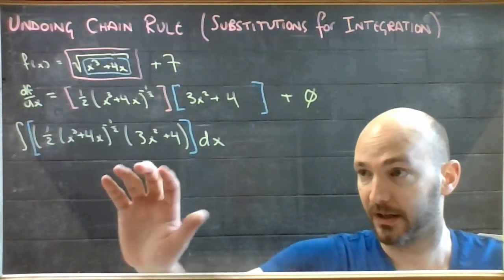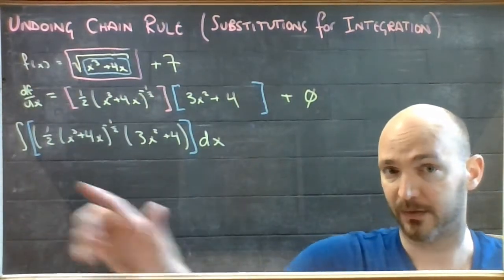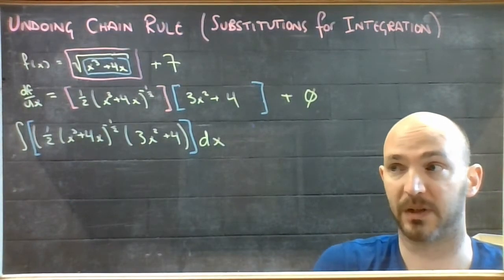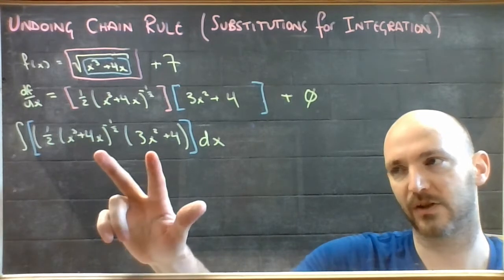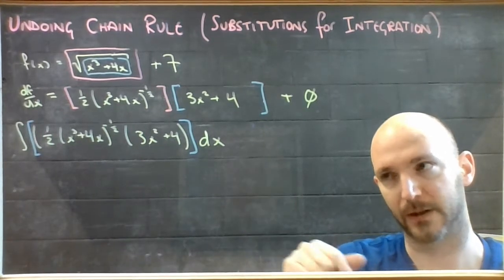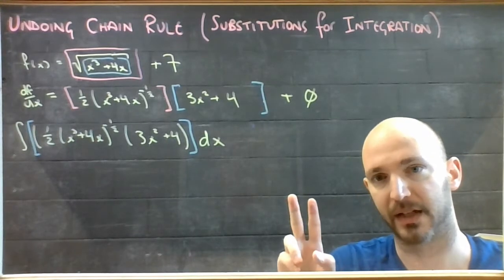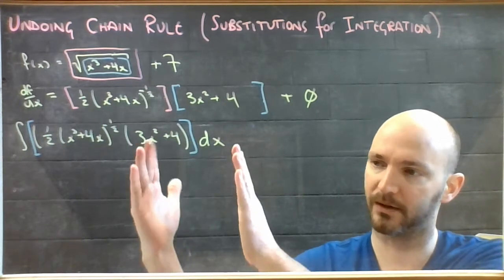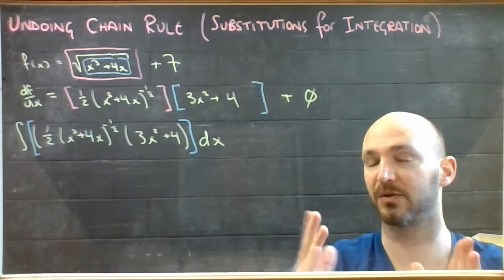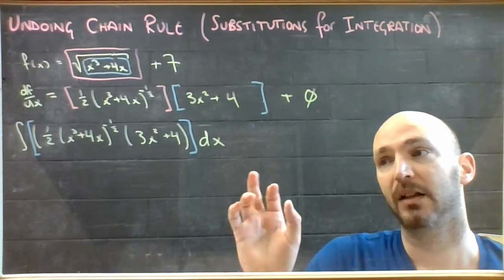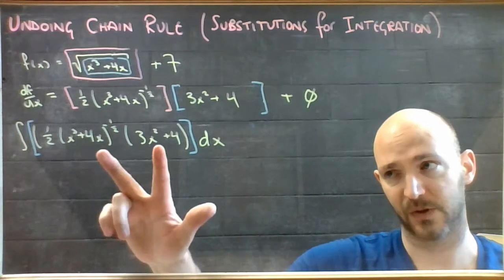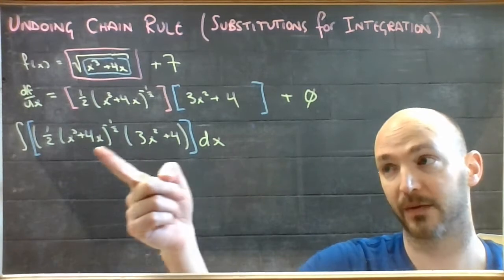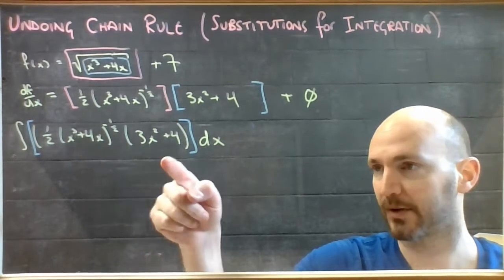Forget all this above. If you were asked this question — what is the integral of this horrendous looking thing — that would be a bit daunting. When you see two pieces multiplying each other, it either came from a chain rule or from a product rule where terms simplified into something tidy. The first question you should ask yourself is: is this part the derivative of that part, or is this part the derivative of that part?